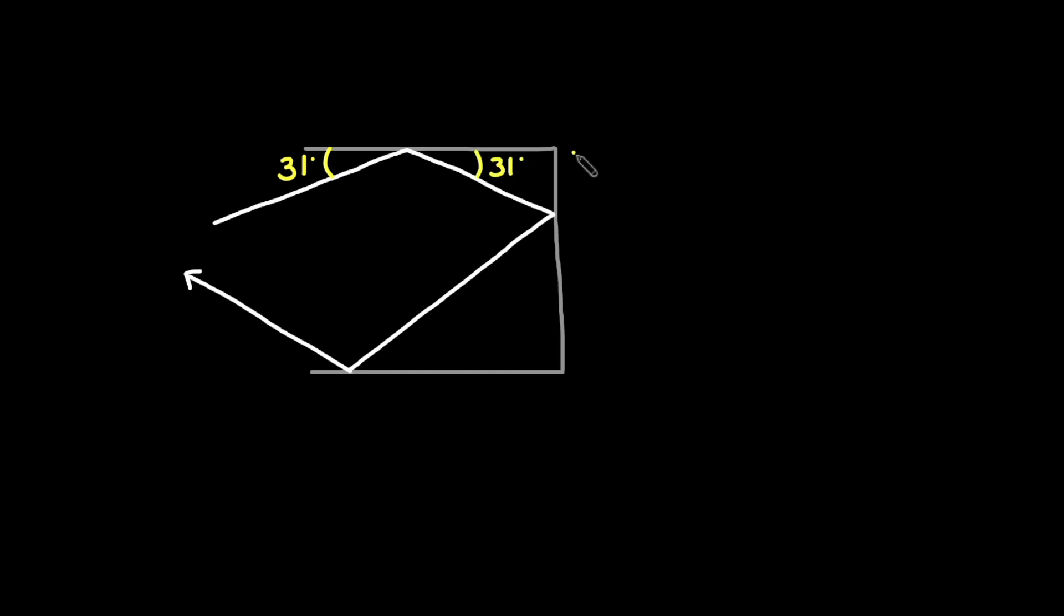Now the light beam forms a right triangle with the second mirror. Since all the angles of a triangle have to equal 180 degrees, we can calculate that the incident angle on the second mirror is 180 degrees minus 90 degrees minus 31 degrees, which is just 59 degrees. If the incident angle on the second mirror is 59 degrees, the angle of reflection will also be 59 degrees.